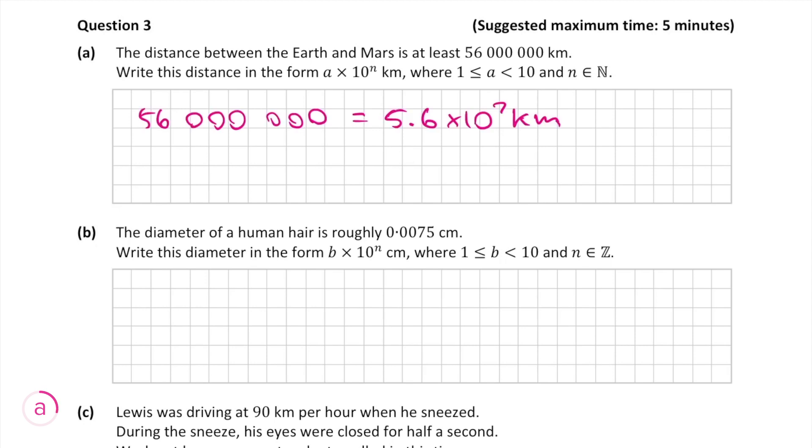You can do this by using the ENG button on your calculator or else by using this method. In 56 million the decimal point is at the end of the number. If we want the first number in scientific notation to be between 1 and 10 we must move the decimal point 7 places to the left.